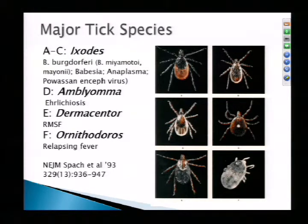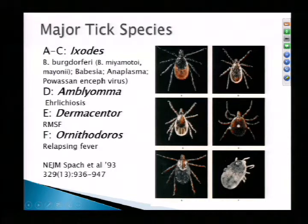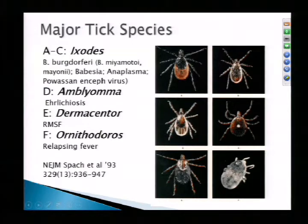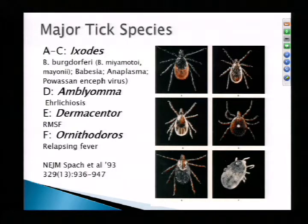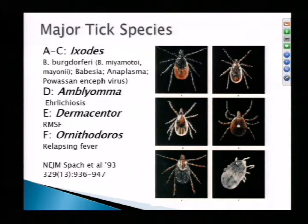D shows the Amblyomma tick, which carries Ehrlichia infections. E is Dermacentor, the vector of Rocky Mountain spotted fever. And then this little soft-shell tick — I'll say Ornithodorus — is the vector for some of the relapsing fever organisms.